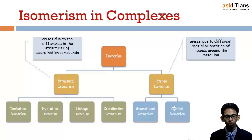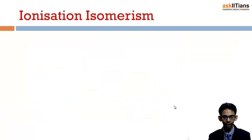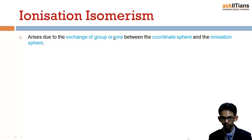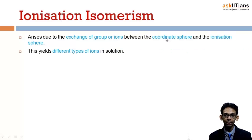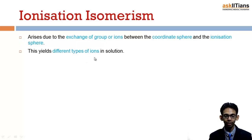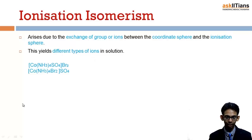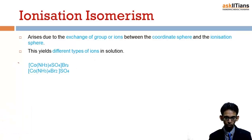Let's start with ionization isomerism. Ionization isomerism arises due to exchange of groups or ions between the coordinate sphere and ionization sphere. These isomers produce different types of ions in solution — that means ionization isomers produce different ions on ionization, and that's why they are known as ionization isomers. Here is an example.